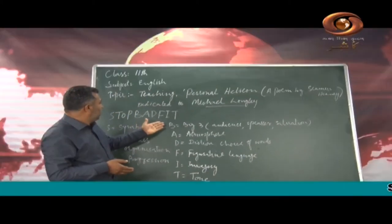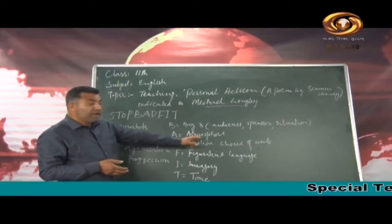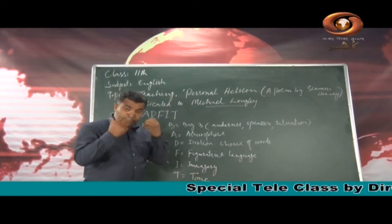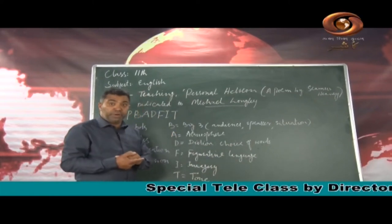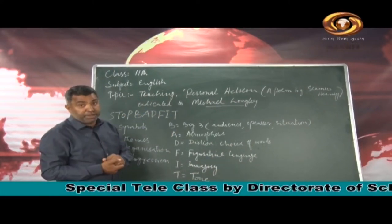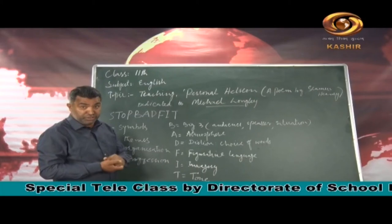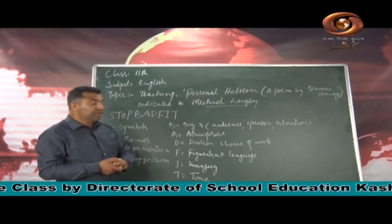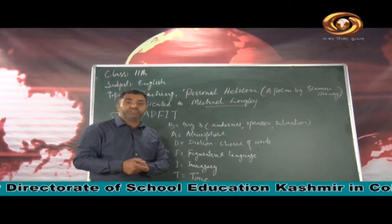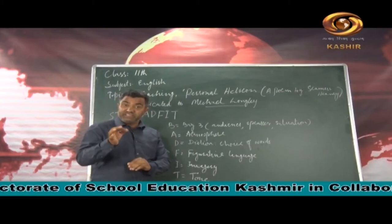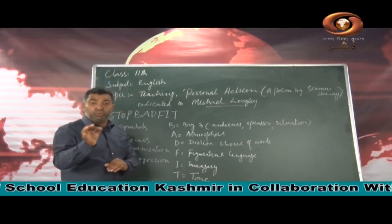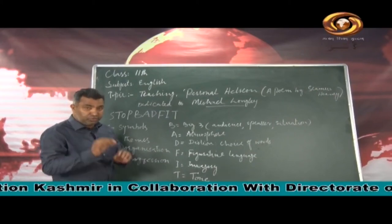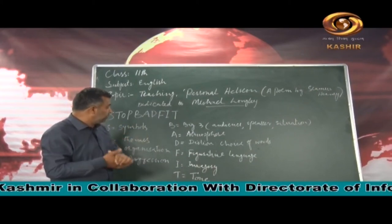Then we come to A — Atmosphere. You need to understand and comprehend the atmosphere that has been projected by the poet in the poem. Then D — Diction. This is the clarity and choice of words that a poet makes, which you need to see and understand.